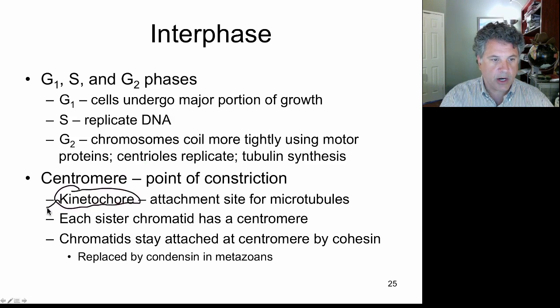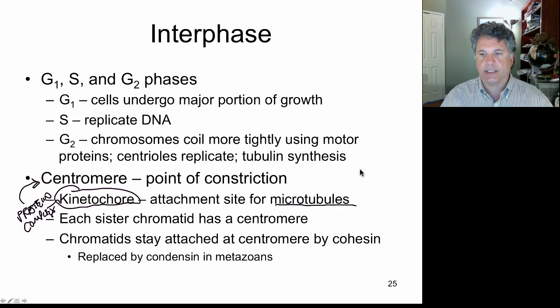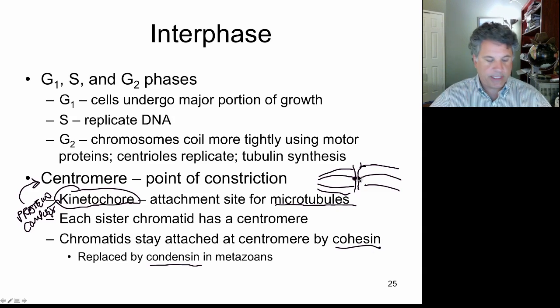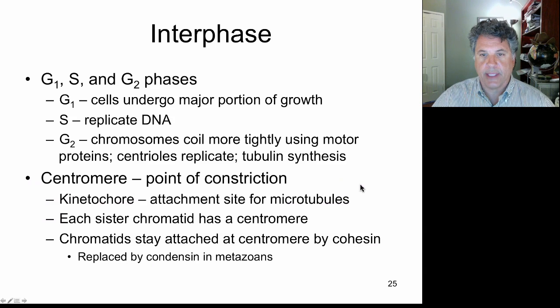The kinetochore assembles at the centromere and it is to the kinetochore that microtubules attach. So if a replicated chromosome looks like this, there are two kinetochores, one for each chromatid and it is there that microtubules, which are part of the mitotic spindle, attach. They attach at the kinetochores. And the chromatids are held together by cohesin or a protein called condensin in metazoans that hold the chromatids together until they separate at anaphase of mitosis.